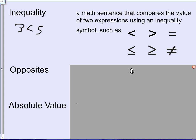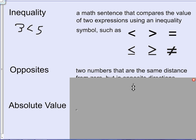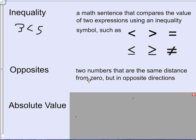We're also going to be talking about opposites. Opposites are two numbers that are the same distance from zero but in opposite directions. For example, negative two and two are opposites.